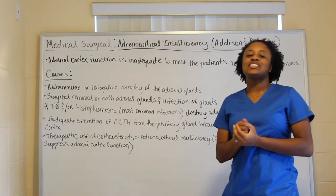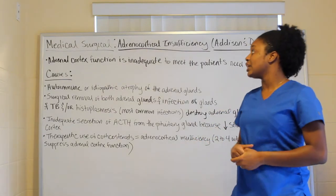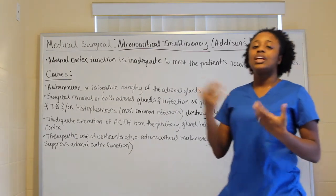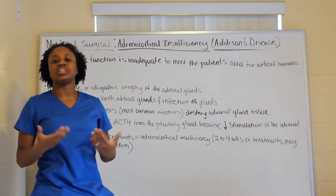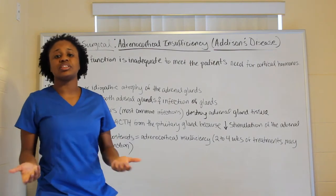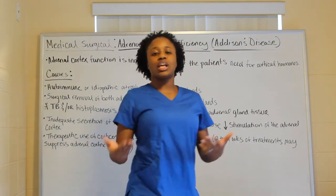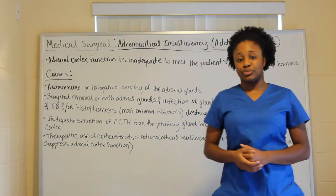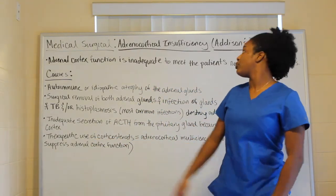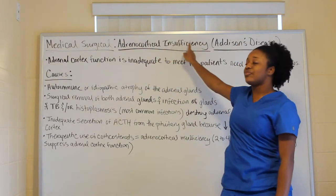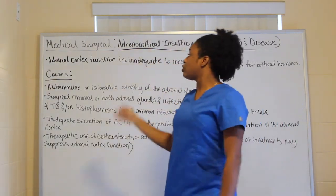Addison's disease is an adrenal cortex function of inadequate demands to meet the patient's needs for cortical hormones — pretty much a decreased amount of cortical hormones for the adrenal glands to function as they're supposed to. The body isn't producing enough, which is why we have insufficiency.